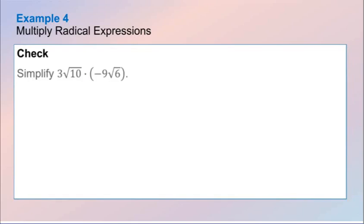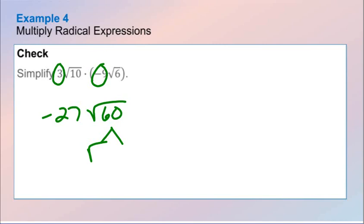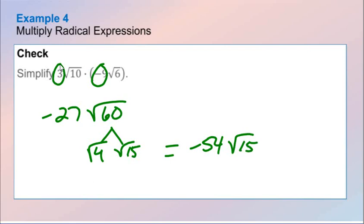Our final question — multiplying these. 3 times negative 9 is negative 27, times 2 times the square root of 60. I can break 60 down: 60 divided by 4 gives us 15, so that's the square root of 4 times the square root of 15. The square root of 4 is 2; 2 times negative 27 gives us negative 54 times the square root of 15. That is our lesson today on operations with radical expressions.